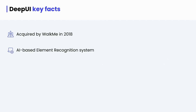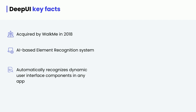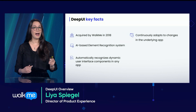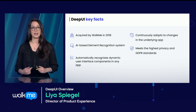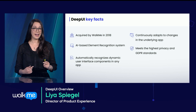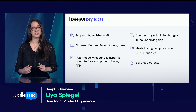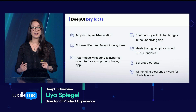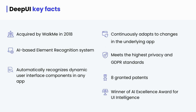What that means is that DPUI automatically recognizes dynamic user interface components in any application. It also has the ability to continuously adapt to changes in the underlying app, and it does all this while meeting the highest privacy and GDPR standards. WalkMe has no less than eight granted patents on this technology, and it helped us earn the AI Excellence Award for cutting-edge UI intelligence product.